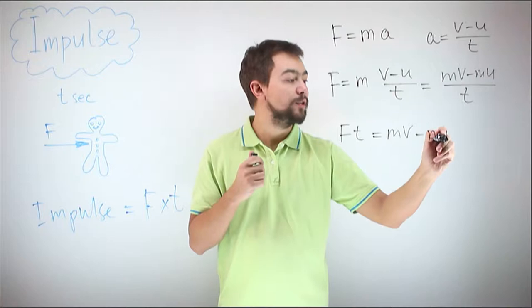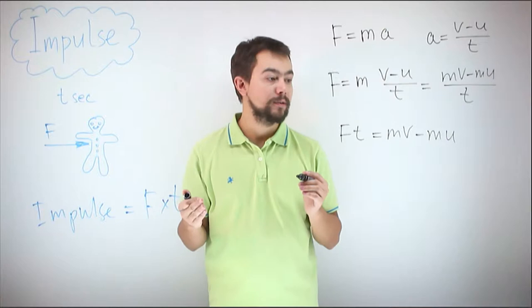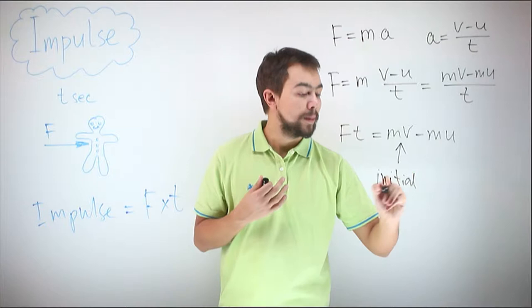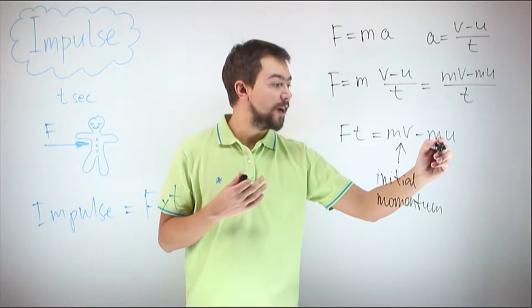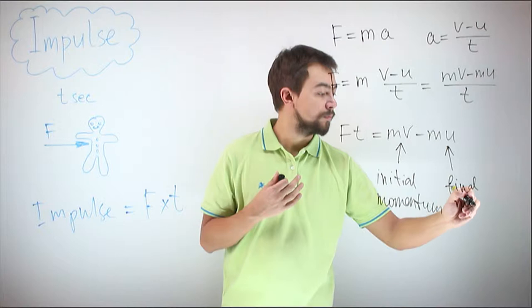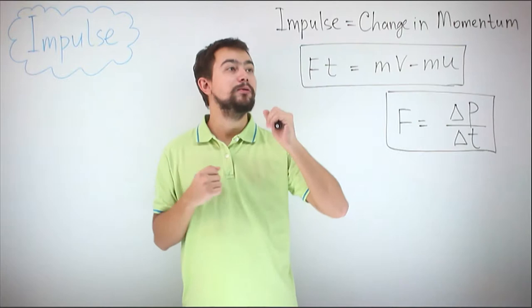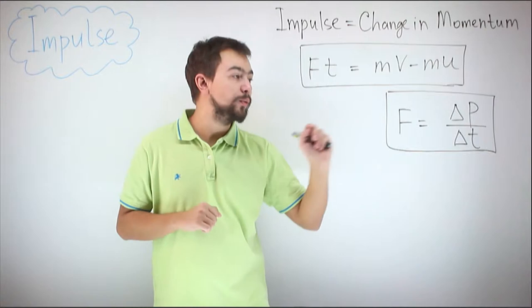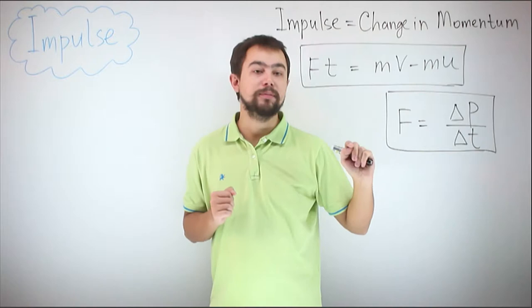In the left part of the equation we have impulse, and on the right part we have the change in momentum. We can see that Mu is the initial momentum and Mv is the final momentum. So now we can write that impulse is equal to change in momentum, or using a formula, Ft is equal to Mv minus Mu. There's also another way of writing the same equation: force is equal to change in momentum divided by change in time.